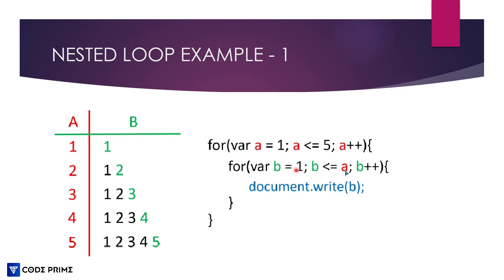When b equals 1, this is the start of the column. b is assigned values less than or equal to a, so all b values will be assigned up to the current a value. This sequence increments one by one: 1, then 1 2, then 1 2 3, then 1 2 3 4, and 1 2 3 4 5. Then you write document.write(b) to print the b variable.